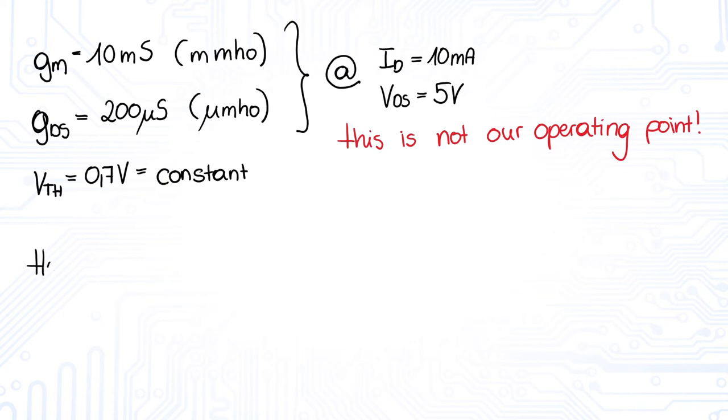The question is, how to derive VGS for this operating point and K and lambda, which are constant values. The answer is to formulate the equations of ID, GM and GDS. The known values are written in green and the unknown values in red.